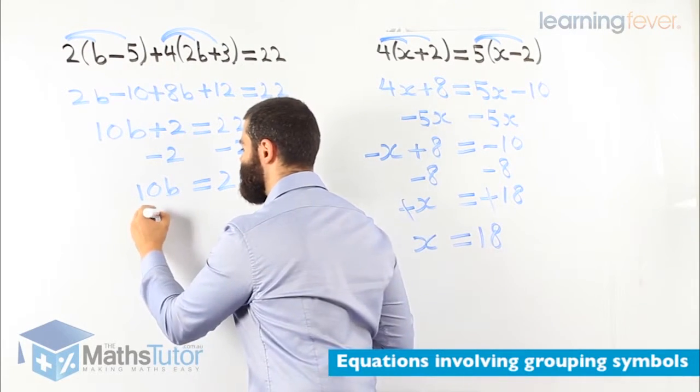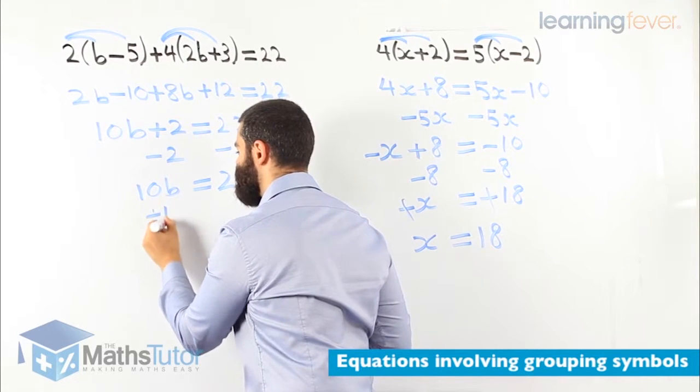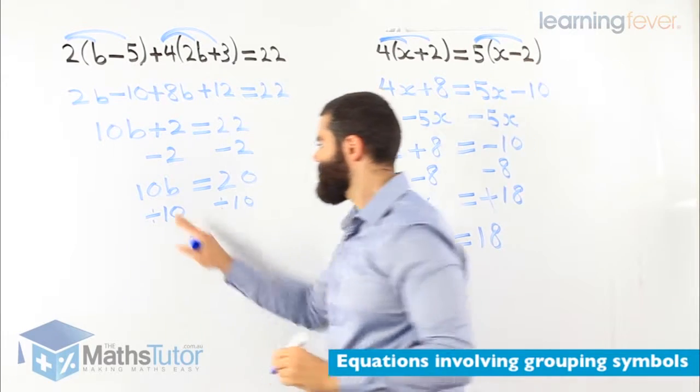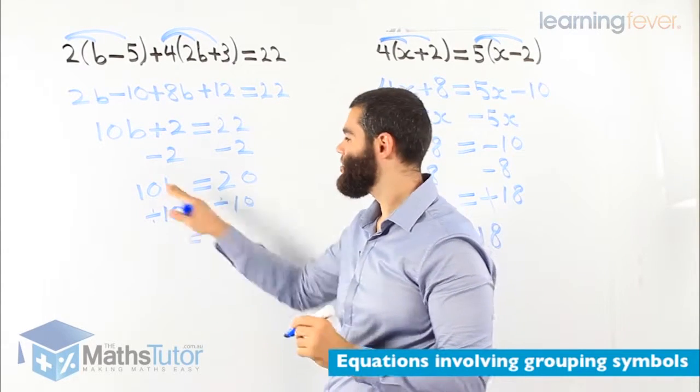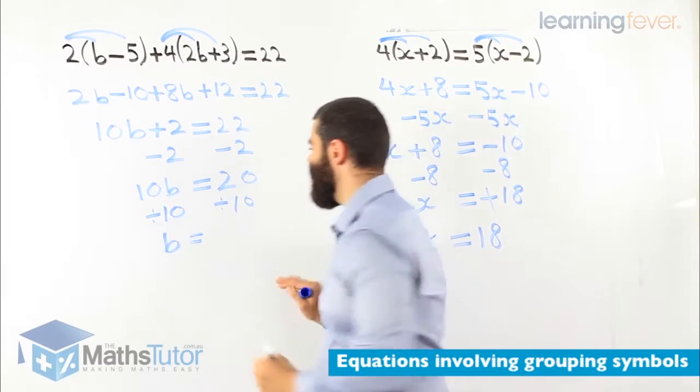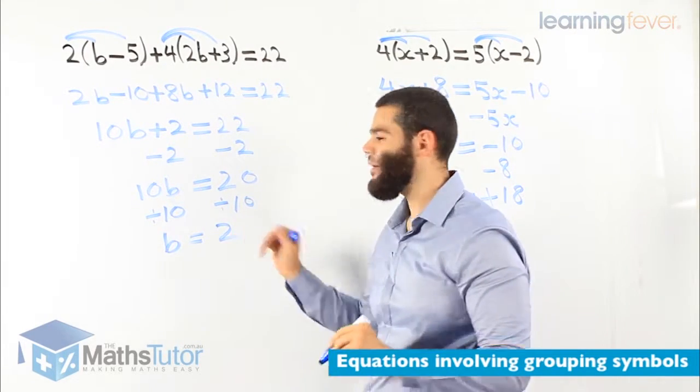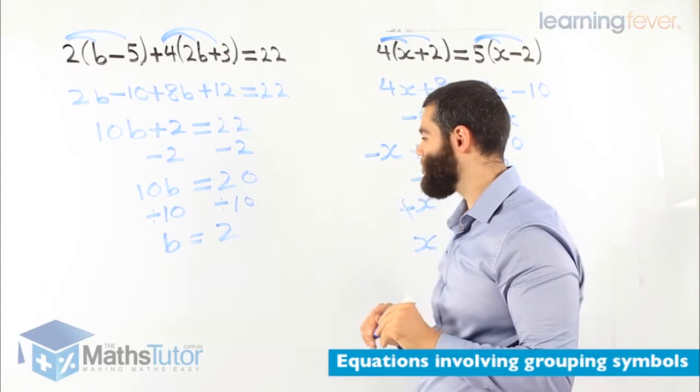10b equals to 20. Now 10b is 10 times b. So times the opposite is divide. 10b divided by 10. 10 divided by 10 is 1. 1b. And 20 divided by 10 is simply 2. Our answer is b equals to 2.